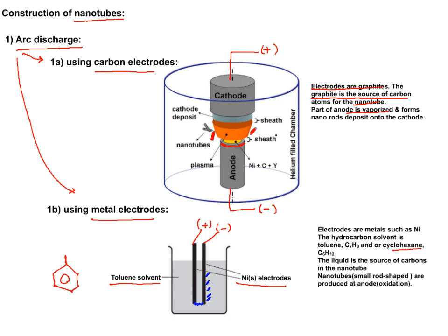The things that you need to remember for arc discharge using metal electrodes: the metals are made out of nickel, for example. The solvent is a hydrocarbon such as toluene or cyclohexane. The liquid toluene or cyclohexane is the source of your nanotubes, and nanotubes get produced at the anode. Also remember, by definition in oxidation and reduction, the anode is always the site of oxidation.